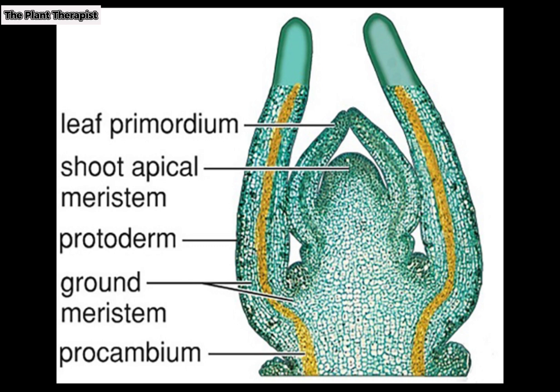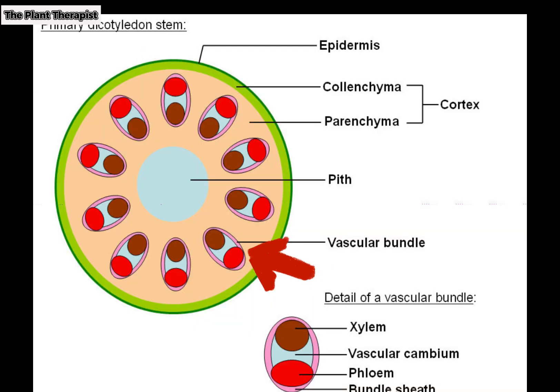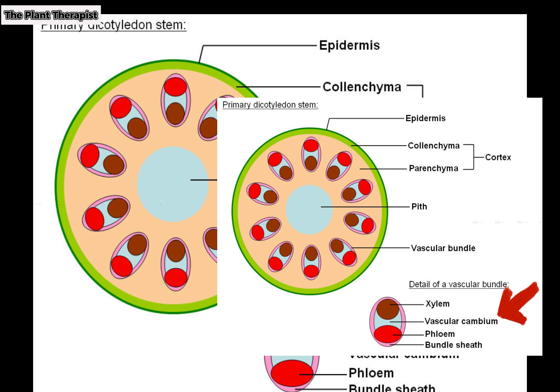Herbaceous dicot stems have discrete vascular bundles composed of patches of xylem and phloem. The vascular bundles are arranged in a cylinder that separates the cortex from the pith, although in a few plants the xylem and phloem are produced as continuous rings instead of in separate bundles.